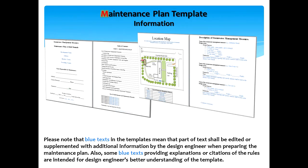The maintenance plan template consists of a list of stormwater BMPs and a map of their location, a description of the stormwater BMP, a preventative and corrective maintenance action plan, maintenance personnel, equipment, tools, and supplies, a disposal plan, cost estimates, safety measures and procedures, a training plan and records, an annual evaluation of the effectiveness of the plan, and BMP-specific added documentation.